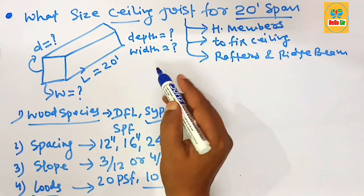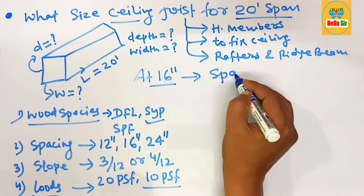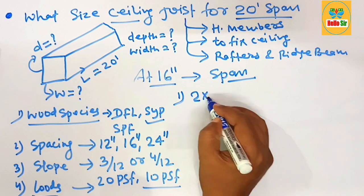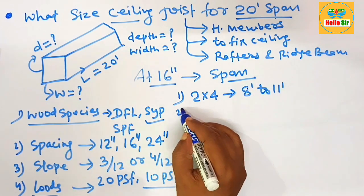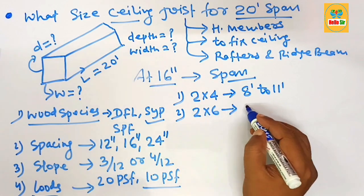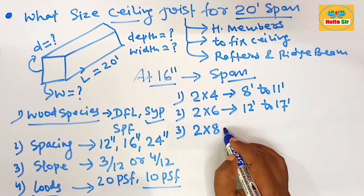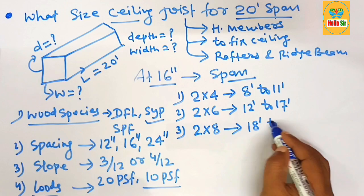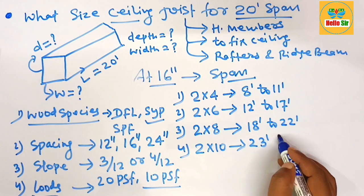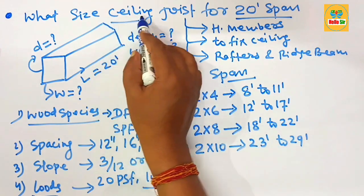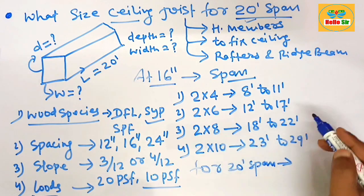For a 20-foot span at standard 16-inch spacing, here are the span ranges for different ceiling joist sizes: A 2x4 can span from 8 to 11 feet. A 2x6 can span from 12 to 17 feet. A 2x8 can span from 18 to 22 feet. A 2x10 can span from 23 to 29 feet. For a 20-foot span, you would need a 2x8.